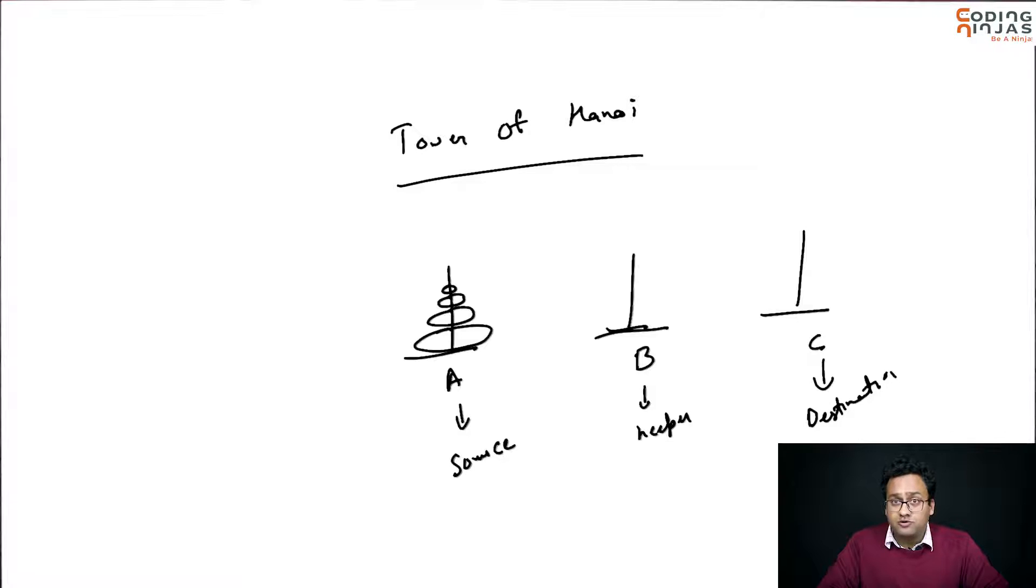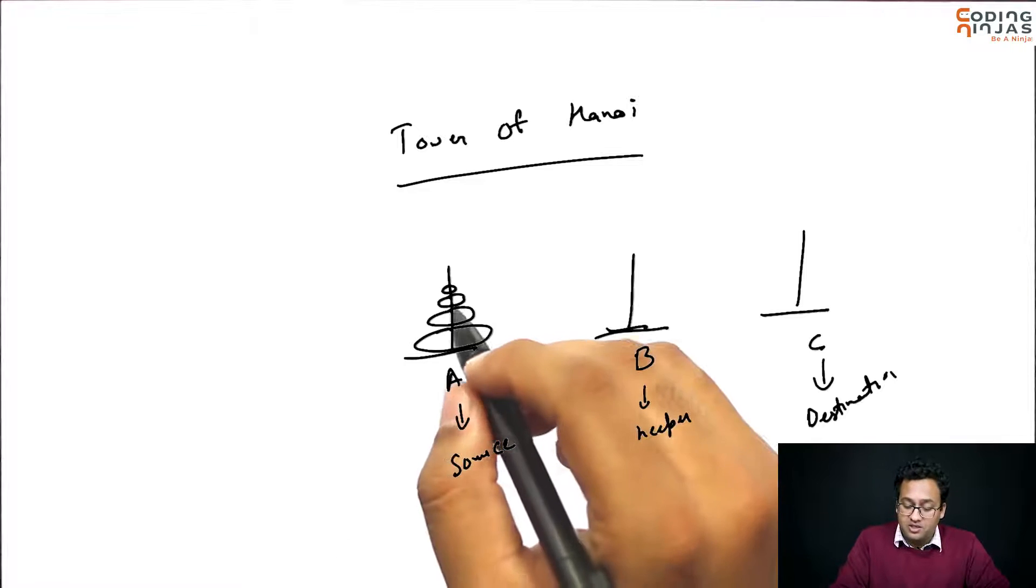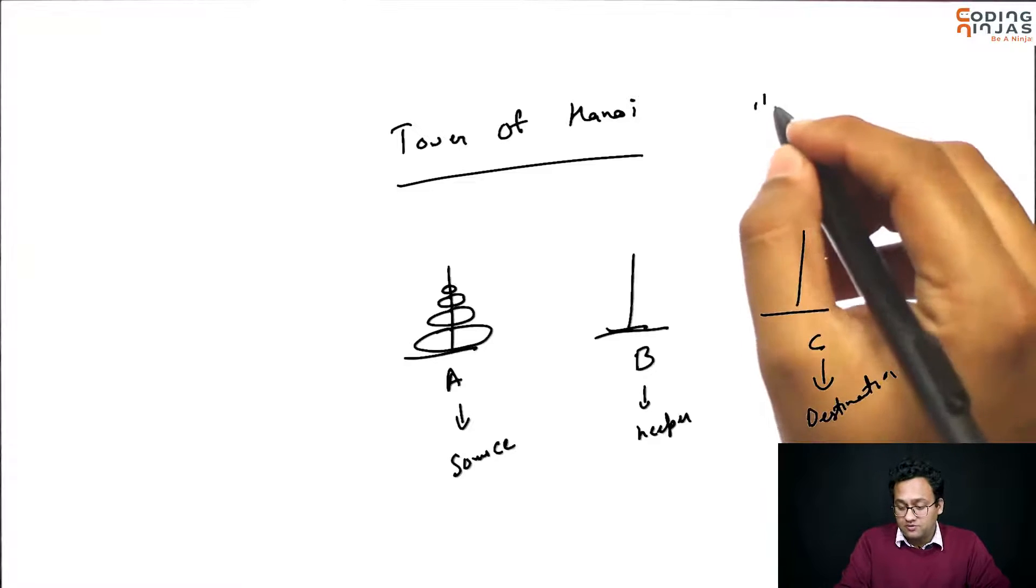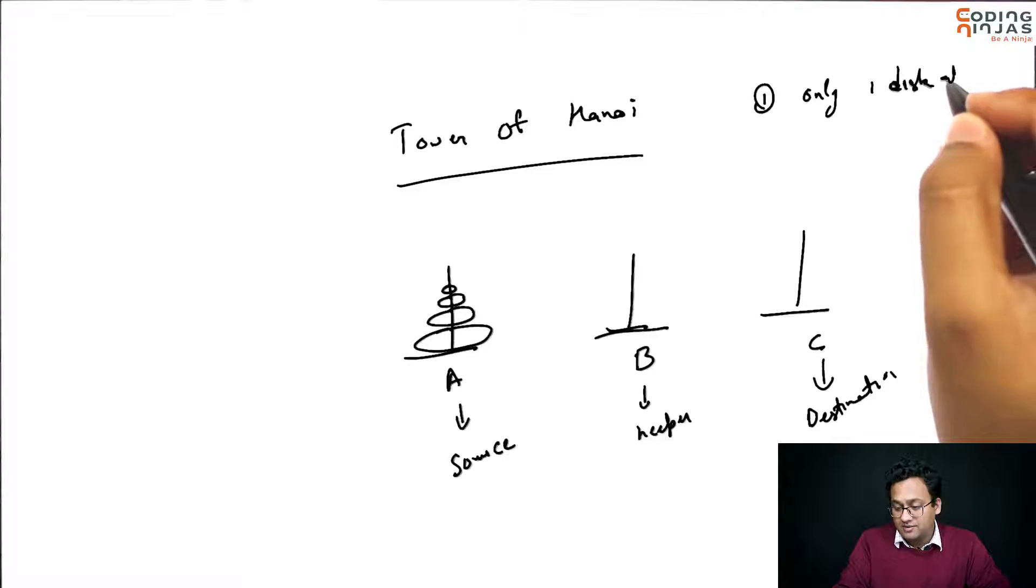There are a couple of rules. First of all, you can pick only one at a time. So, I can only pick one disk at a time and move it. First rule is only one disk at a time.